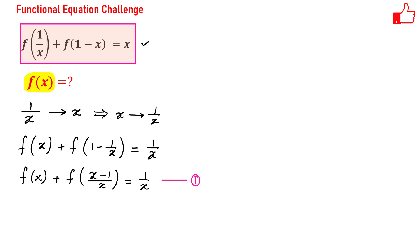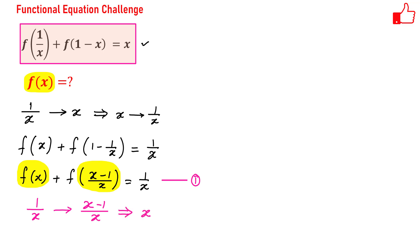If you notice Equation 1, we have f(x) which is the desired term, but we got an extra term f((x-1)/x), so we need to eliminate this. For that purpose, I will make another substitution: I will replace 1/x with (x-1)/x, or in other words replace x with x/(x-1).